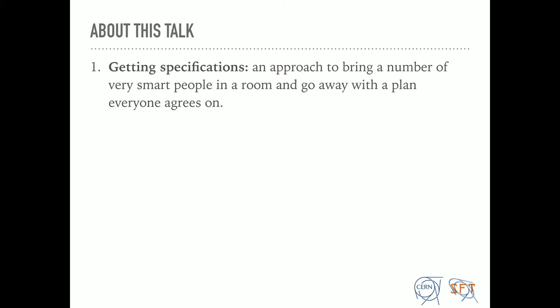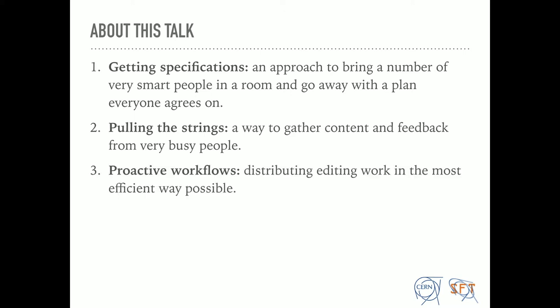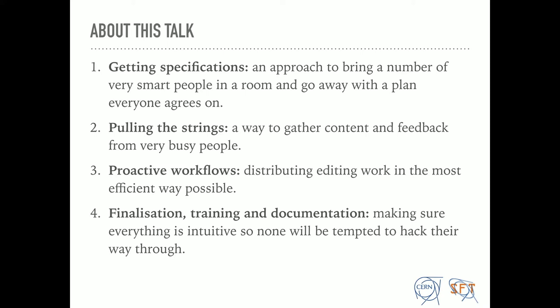This talk has four parts. It's about getting specifications — basically how to gather a lot of very smart and capable people in a room and go away with a plan. How to get feedback, information, and content when your project is not exactly a priority, because websites don't make academic papers. Proactive workflows — distributing the editorial work between very busy people in a way that will allow their websites to survive and not become obsolete the moment they go online. And finalization, training and documentation to help people keep up with what is left behind for them.